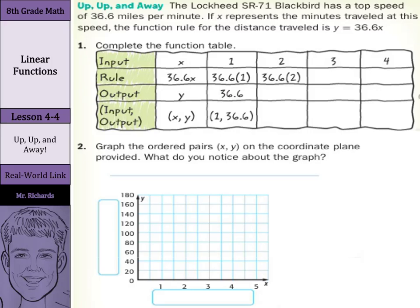Our first step is to complete the function table. When our input is x, we're going to take the rule 36.6x. Our output is going to be y, so our input output is xy. Our first one is done for us. We have our input of 1. Our rule, 36.6 times the 1 minute. Our output is 36.6 miles. So for 1 minute, we've gone 36.6 miles.